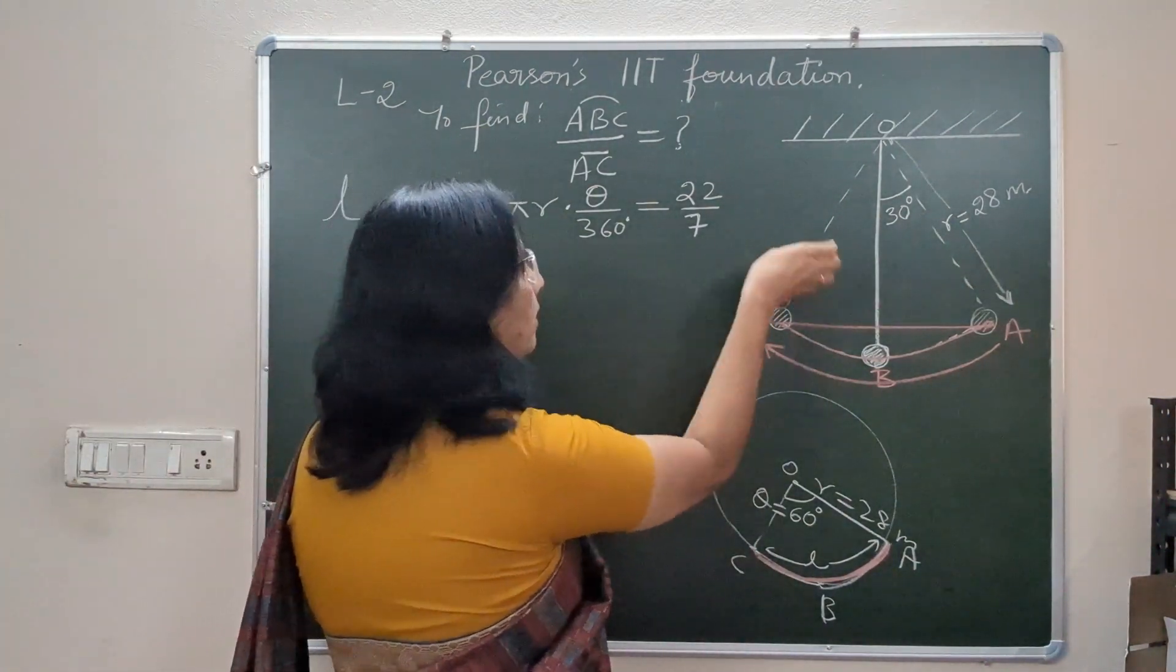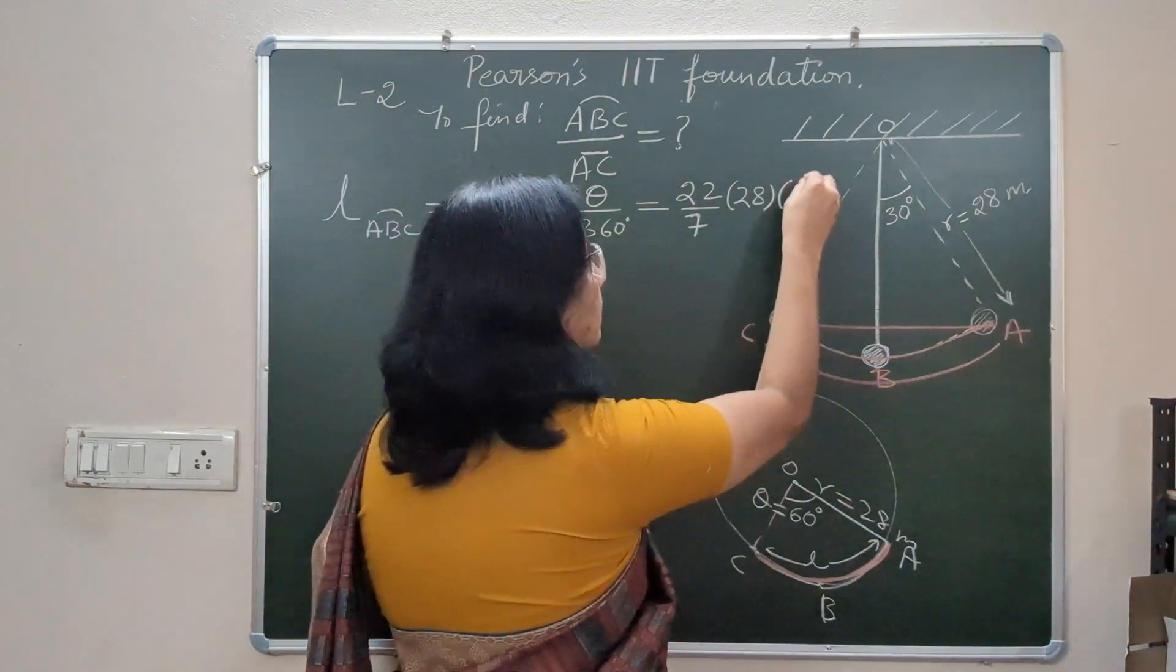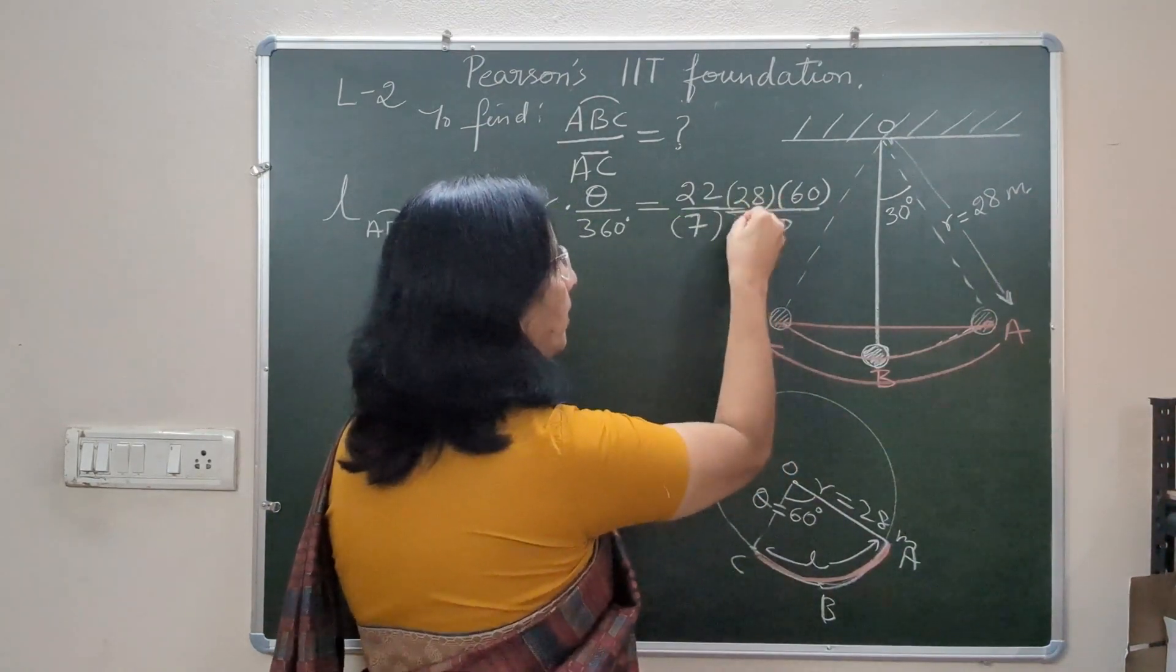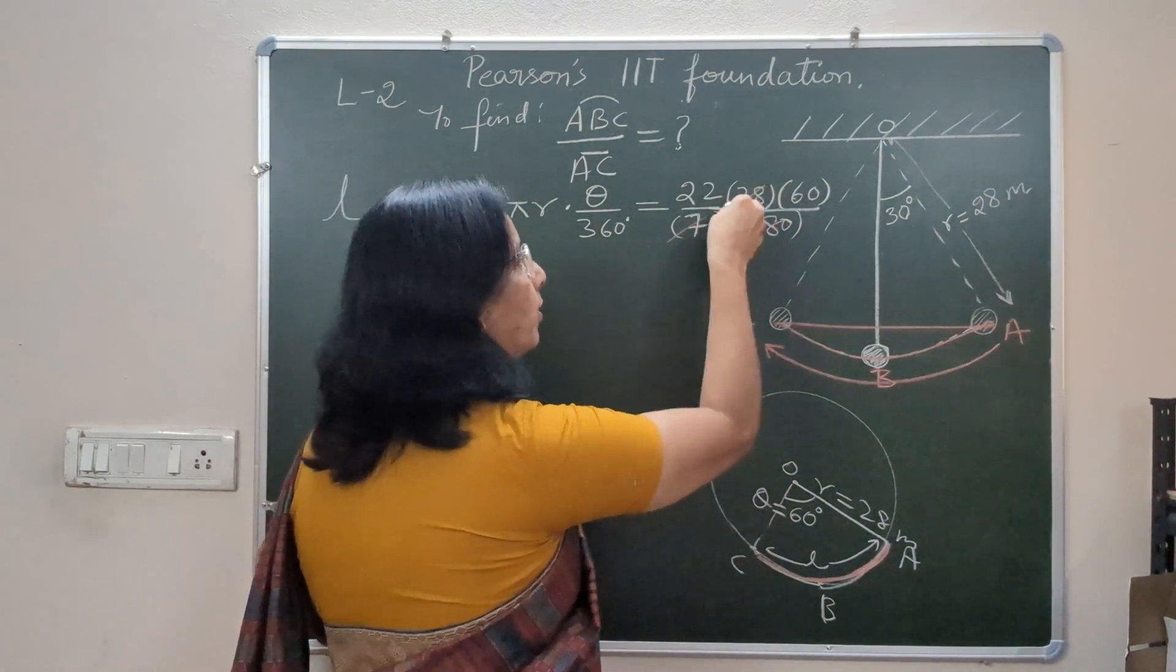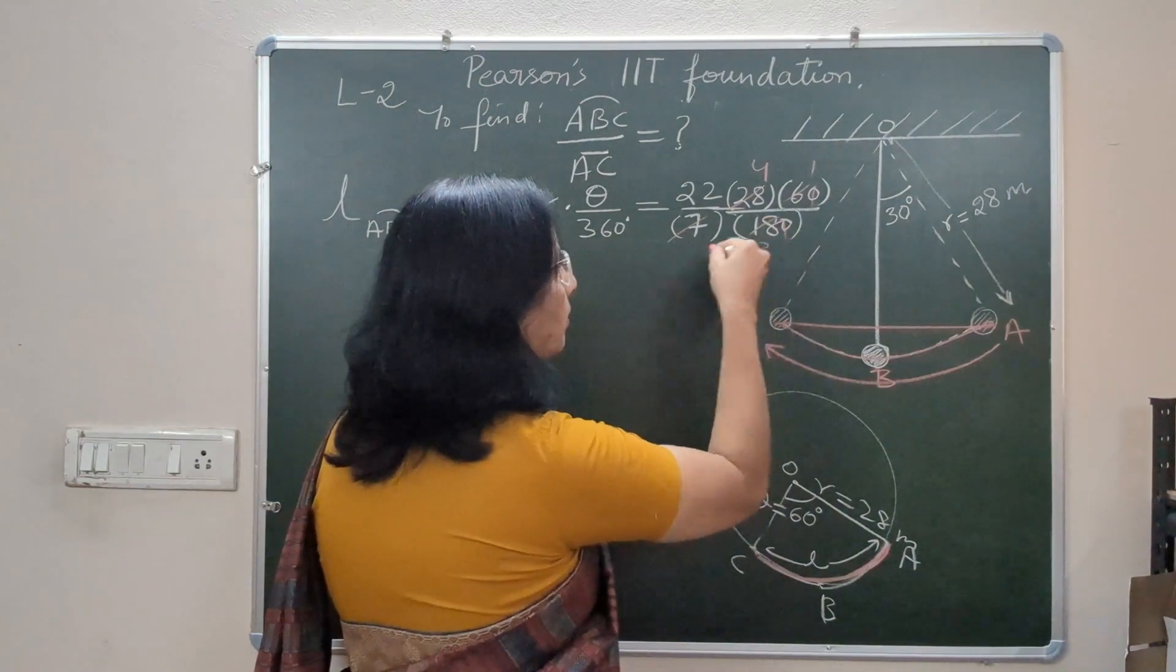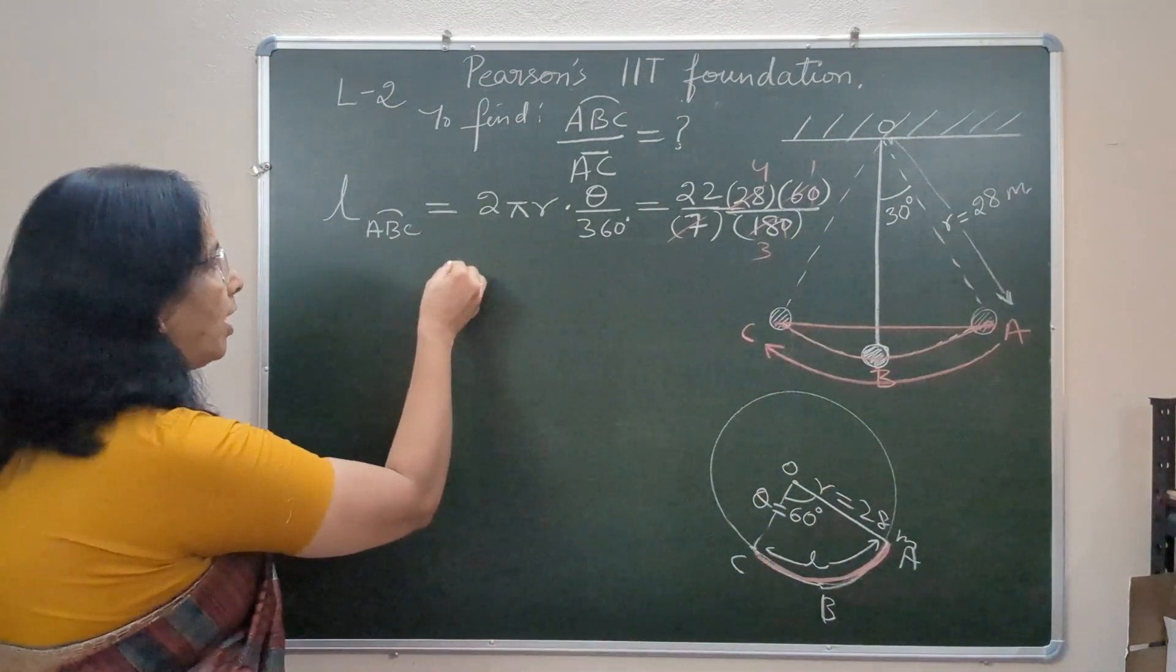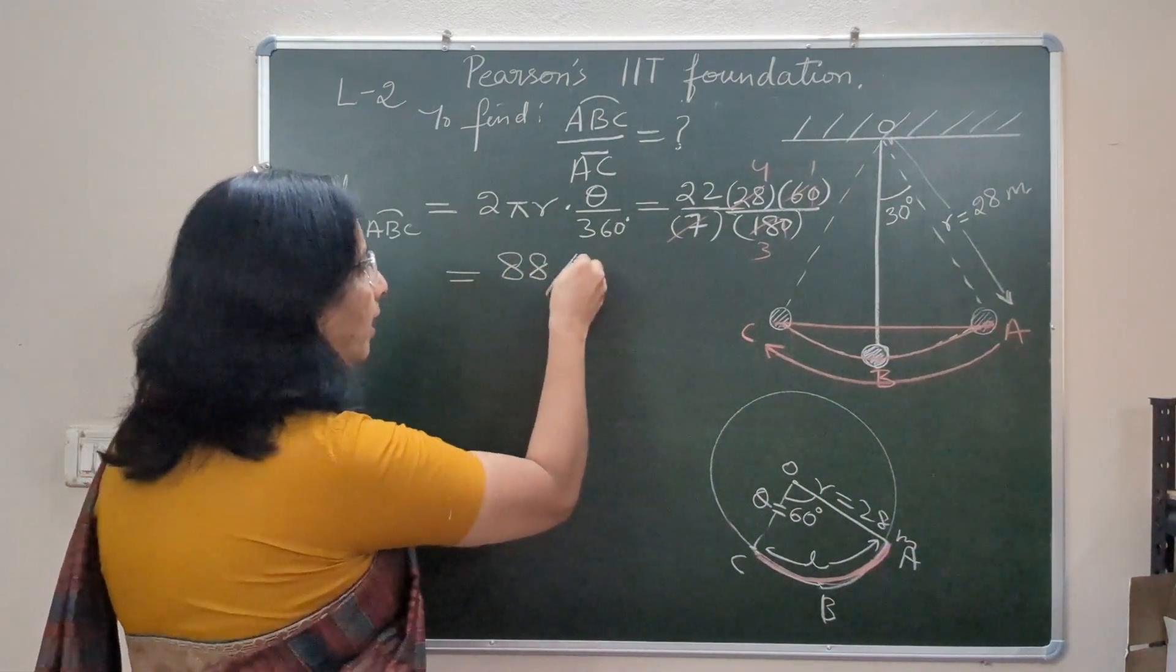So pi r, where r is 28, theta is 60, and the denominator is 180. So we have some cancellations: 7 into 1 is 7, 7 into 4 is 28, 6 into 1 is 6, 6 into 3 is 18. And I think that's all. So length of arc is 88 by 3.